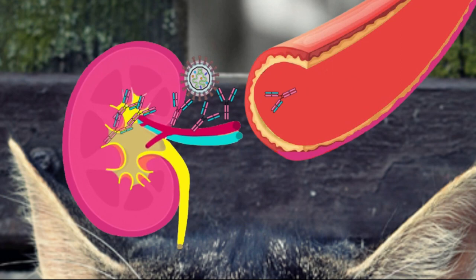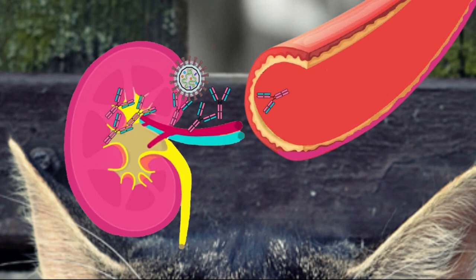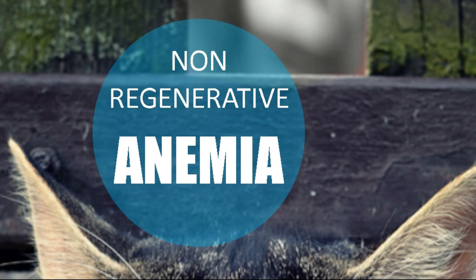This results in a blood test finding of hypergammaglobulinemia, as there is an excess of antibodies. We can also find other blood alterations such as anemia — a decrease in red blood cells because the bone marrow struggles to replace dying red blood cells, which is a non-regenerative anemia — as well as a decrease in platelets and a decrease in leukocytes.